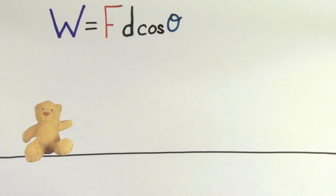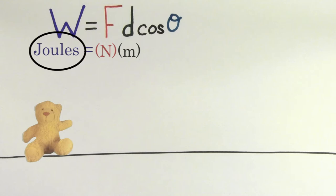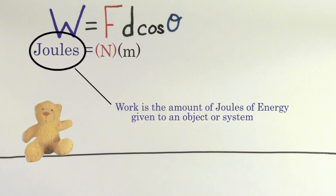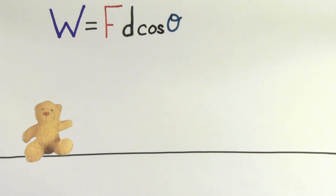We notice a few things about this formula. The units for work are newtons times meters, which we call joules. Joules are the same unit that we measure energy in, which makes sense because work is telling you the amount of joules given to or taken away from an object or a system.